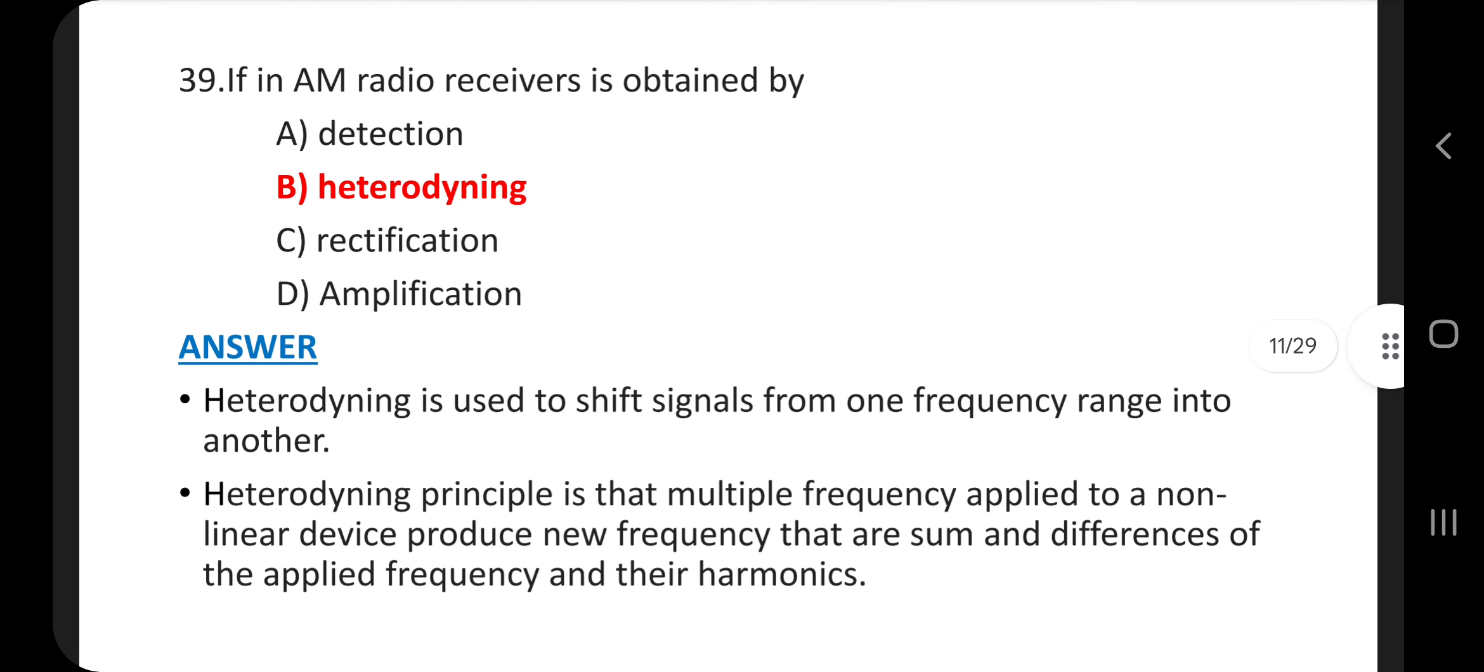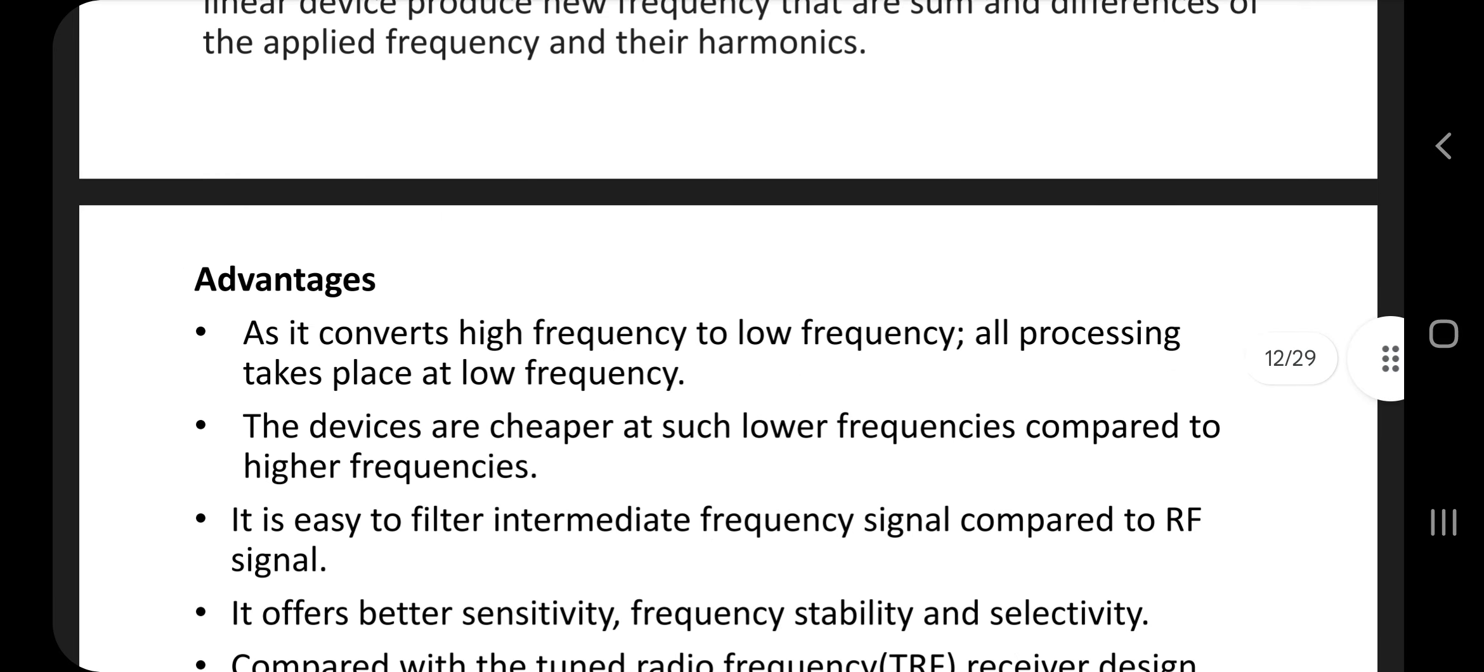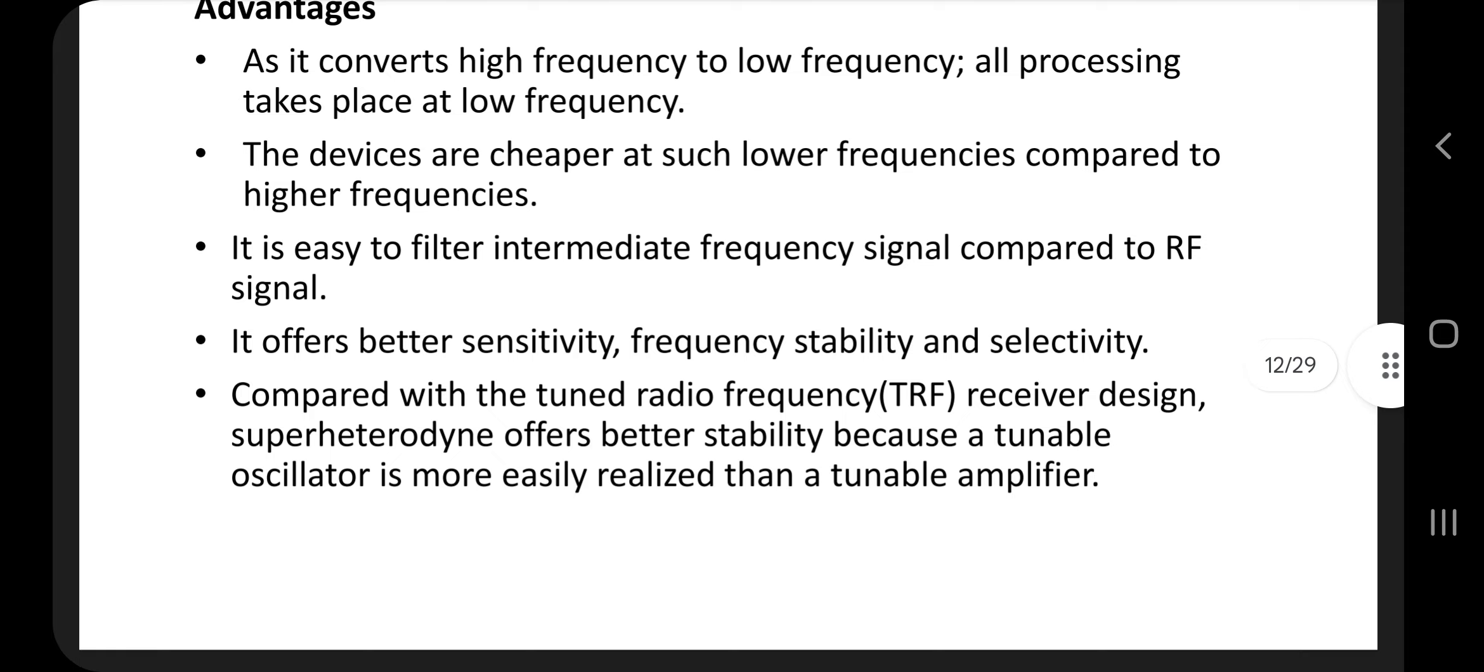Question number 39. If an AM receiver is obtained by, answer is option B, heterodyning. Heterodyning is used to shift signals from one frequency range into another. Heterodyning principle is that multiple frequencies applied to a non-linear device produce new frequencies that are sum and differences of the applied frequency and their harmonics. As it converts high frequency to low frequency, all processing takes place at low frequency. The devices are cheaper at such lower frequencies compared to higher frequencies.